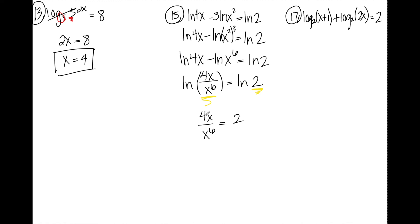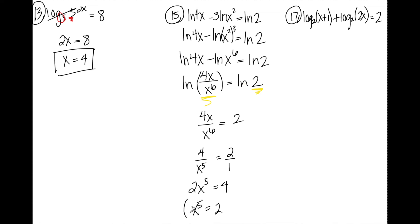Now I can solve. 4x over x to the sixth is the same as 4 over x to the fifth, and I can write 2 as 2 over 1. Cross-multiplying gives 2x to the fifth equals 4. Dividing by 2, I get x to the fifth equals 2. To remove the fifth power, I raise both sides to the one-fifth. My final answer is x equals 2 to the one-fifth.